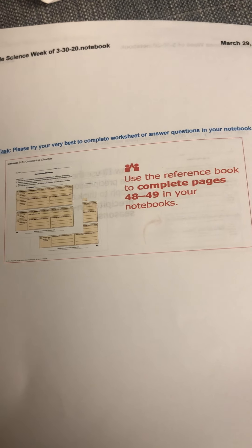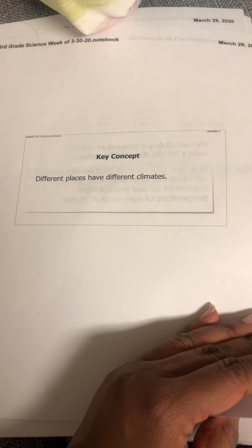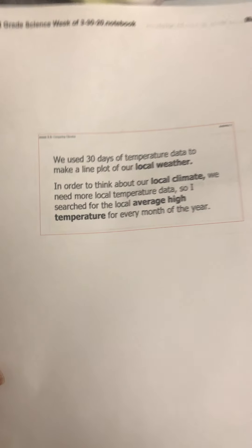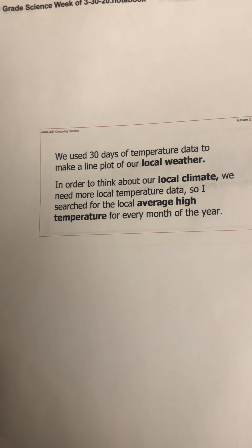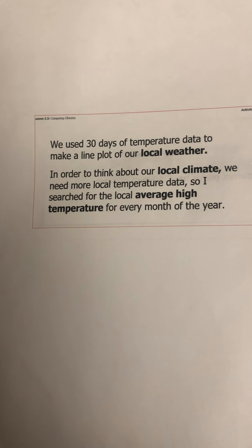It says specifically to use the reference book to complete pages 48 and 49 in your notebook, and those pages are attached at the very end of the PowerPoint slide. Different places have different climates — we know that by connecting the text we read about San Francisco and Boston climates last week. We used 30 days of temperature data to make a line plot of our local weather in order to think about our local climate. We need more local temperature data, so I searched for the local average high temperature for every month of the year.